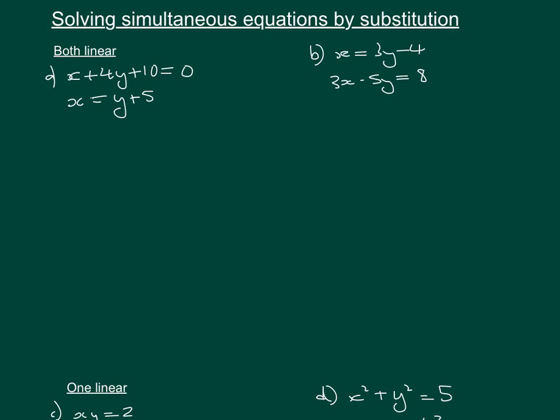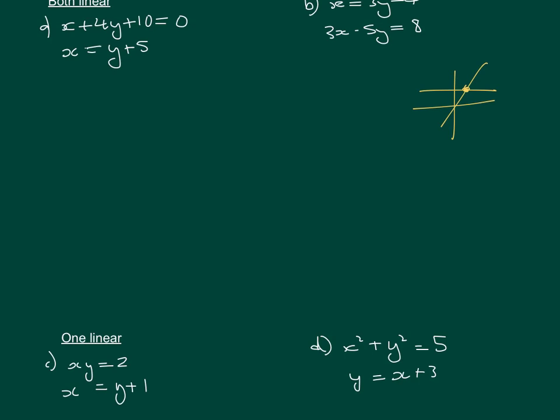The linear ones are essentially just two straight lines that meet, and that coordinate is the solution. Whereas with one linear and one circular graph — like this one down here — that looks like a circular graph matched with a linear graph, and we're going to have two sets of solutions.